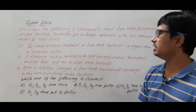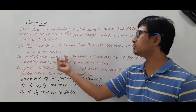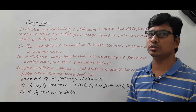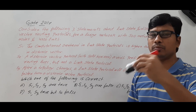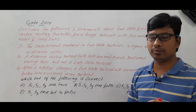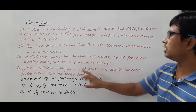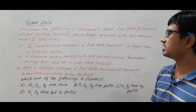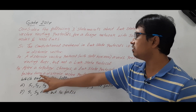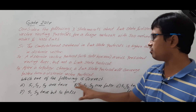Statement S2 is given as: a distance vector protocol with split horizon — they have explicitly written 'with split horizon' — avoids the count to infinity problem and the loops problem. With split horizon route advertisement, the count to infinity problem will be solved and also the loops problem will be solved in the distance vector. Statement S3: after a topology change, a link state protocol will converge faster than the distance vector protocol. These are the three statements and they are asking which of the following options is correct.